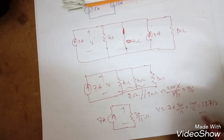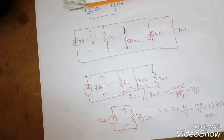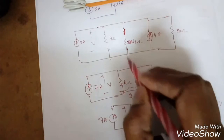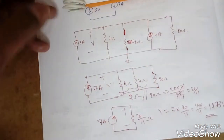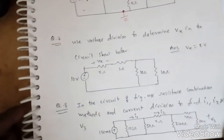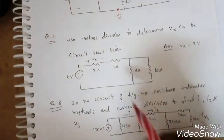Solving this: 140/11 gives approximately 12.73 volts. This is how to solve this problem.